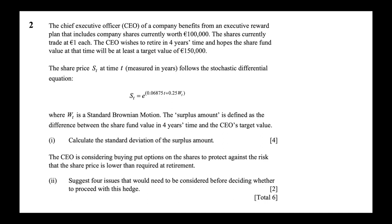Where Wt is a standard Brownian motion, and the surplus amount is defined as the difference between the shares fund value in four years time and the CEO's target value. What we need to do is calculate the standard deviation of the surplus amount.